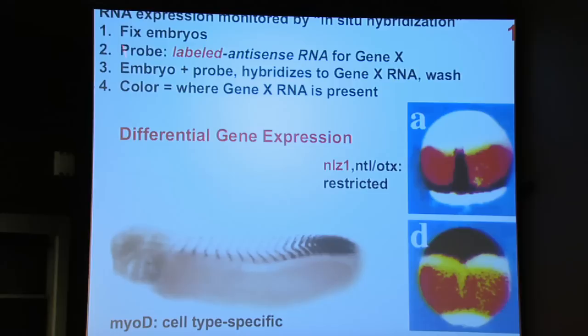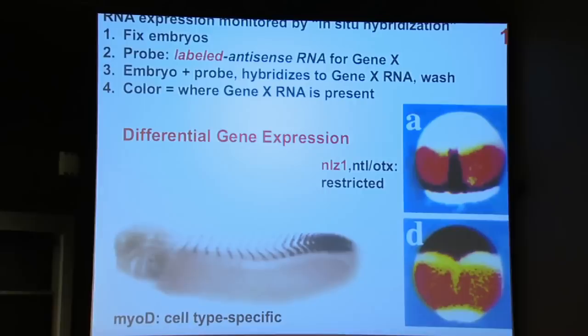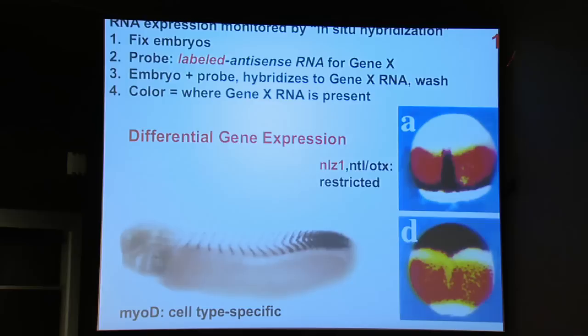In situ hybridization uses the principles of base pairing. You take embryos, fix them — killing and permeabilizing them — then use an antisense RNA probe labeled for a particular gene of interest. You mix the probe with the permeabilized embryo; where the RNA for gene X is, it will base pair to your antisense probe. You wash out the extra probe and look for the labeled color, which tells you where the RNA for a particular gene is located.